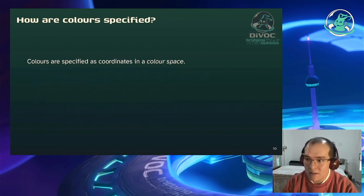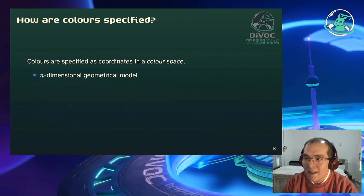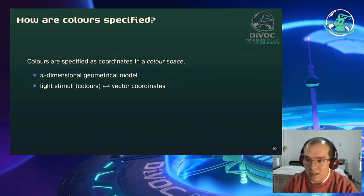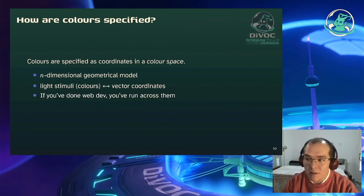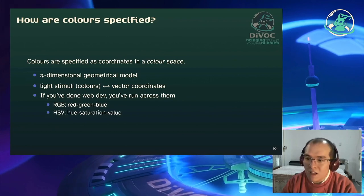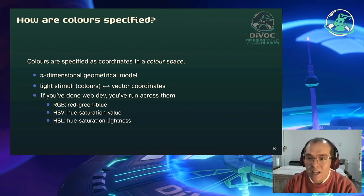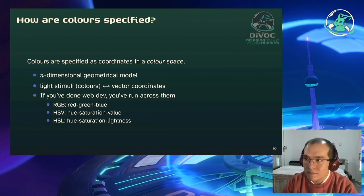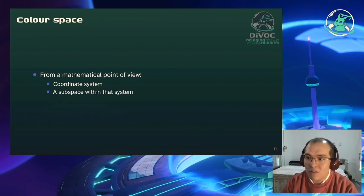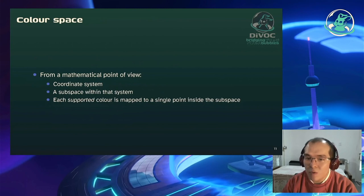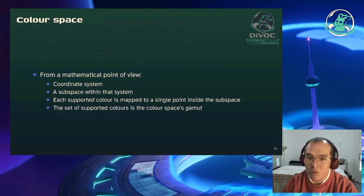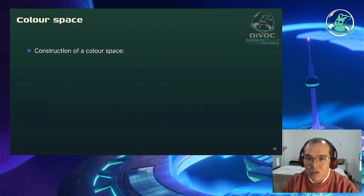Wie werden Farben definiert? Sie werden definiert als Koordinaten in einem Farbraum. Geometrisch gesehen ist ein Farbraum ein n-dimensionales Modell, das heißt verschiedene Farben können übersetzt werden in Vektorkoordinaten. Bekannte Farbräume sind zum Beispiel RGB (Rot, Grün, Blau), HSV (Farbe, Sättigung und Wert) und HSL (Farbe, Sättigung und Helligkeit). Mathematisch gesehen ist ein Farbraum ein Koordinatensystem, in dem wir einen Unterraum definieren. Der Satz der unterstützten Farben ist das Gamut, der Span dieses Unterraums.